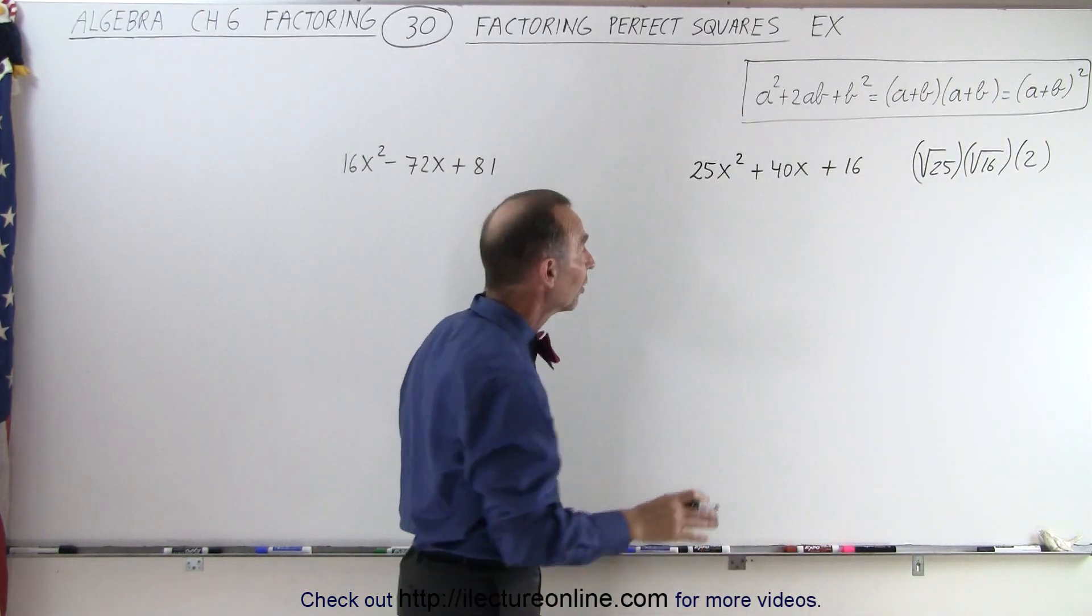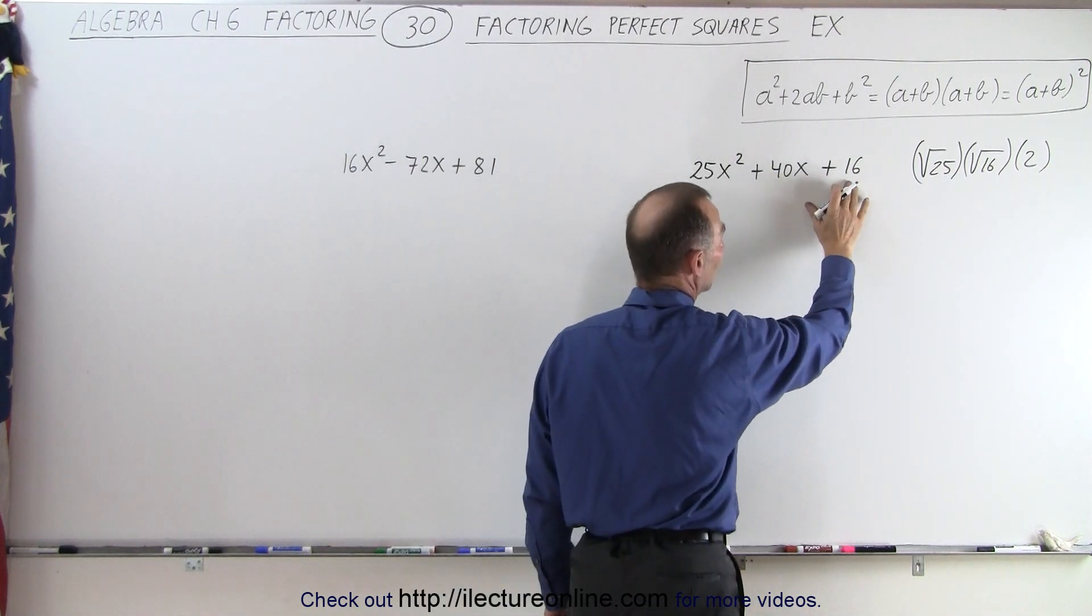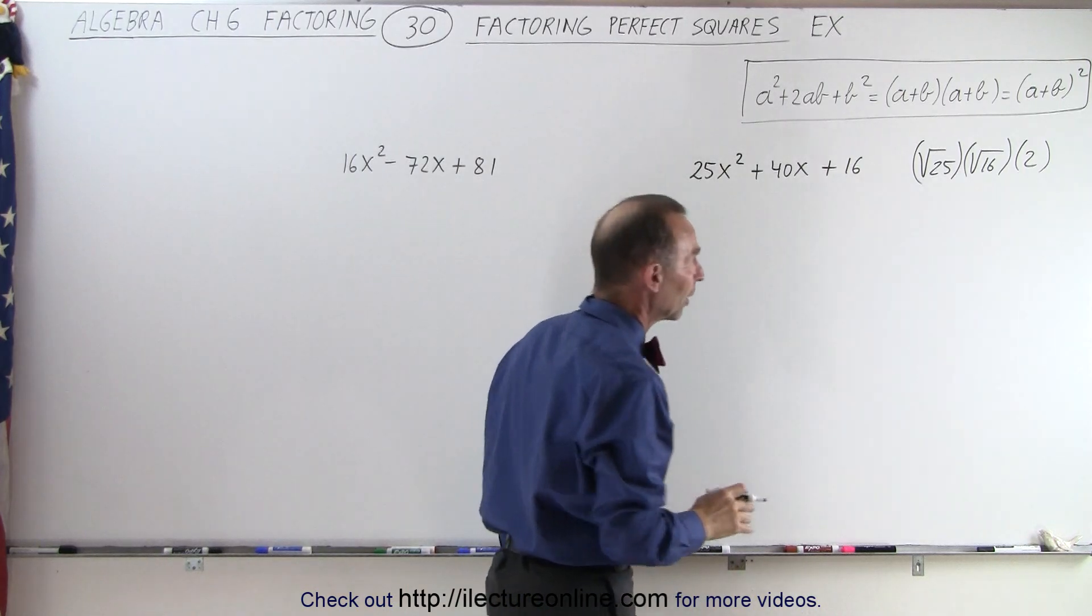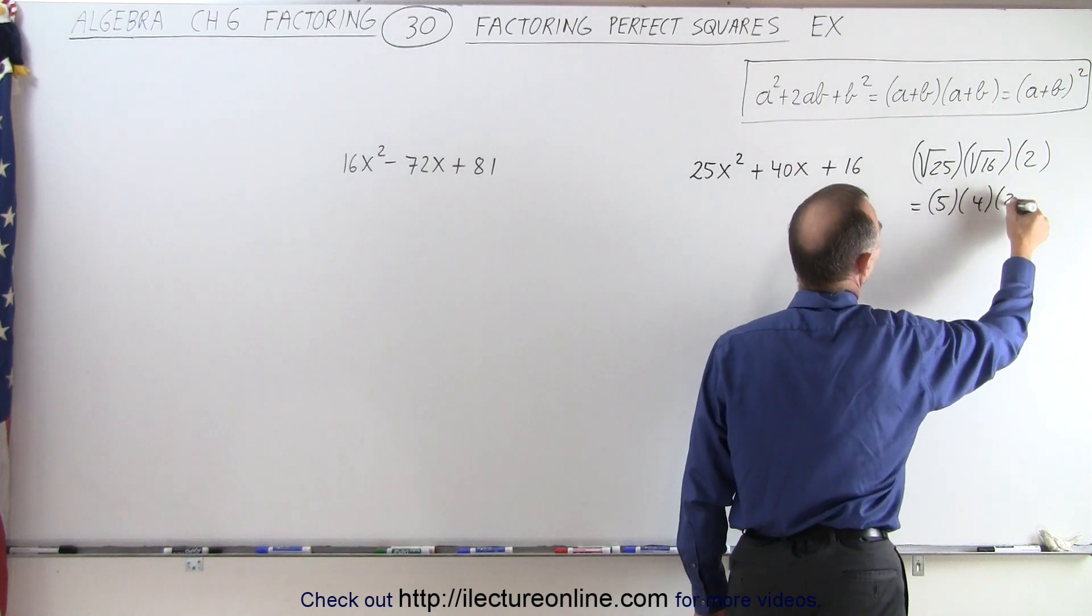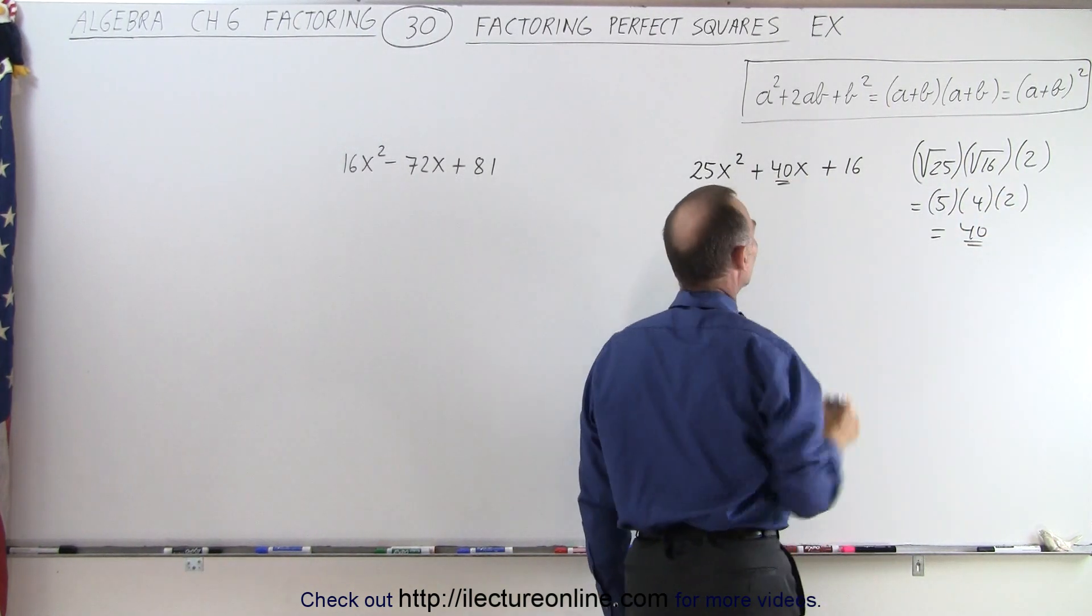Remember, if the middle term is twice the square root of the first term times the square root of the second term, then we have ourselves a perfect square. So this can be written as 5 times 4 times 2, which is equal to 40. And sure enough, that is equal to the middle term.